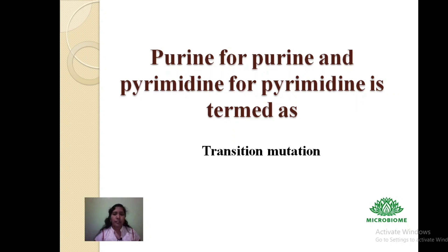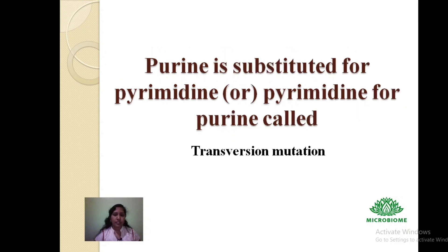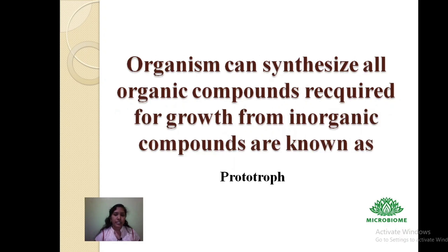Purine for purine and pyrimidine for pyrimidine is termed as transition mutation. Purine substituted for pyrimidine or pyrimidine for purine is called transversion mutation.